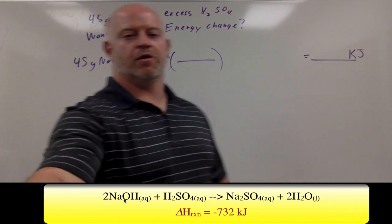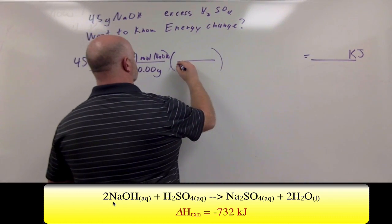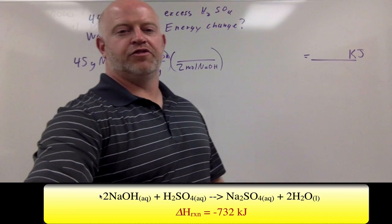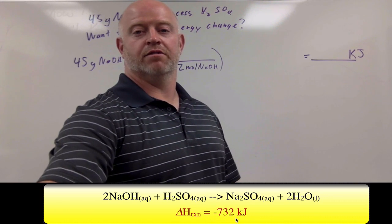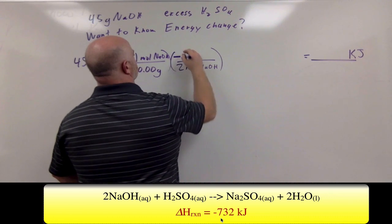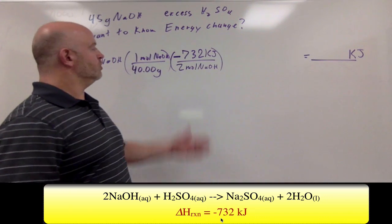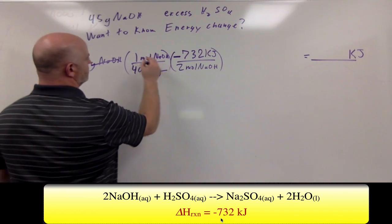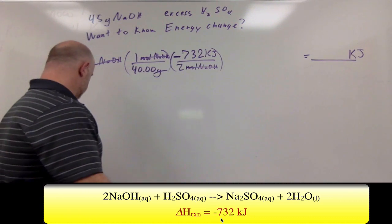So 45 grams, 40 grams per mole. And now here's the easy step. We know from our balanced chemical equation that we have two moles of sodium hydroxide. So we have two moles. And for every two moles of this, we get a negative 732 kilojoules of energy here. So for every two moles of this, it's a negative 732 kilojoules of energy. So we use it just like another ratio in our normal stoichiometry. My grams of sodium hydroxide cancels, my moles of sodium hydroxide cancels, and now I can plug the math in and solve for my kilojoules.